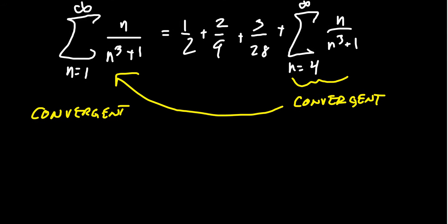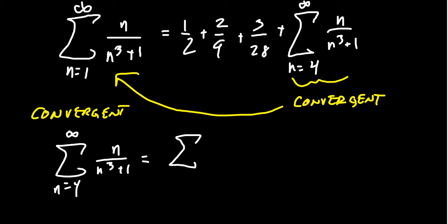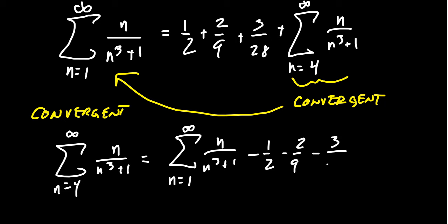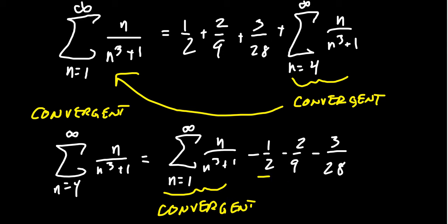We can flip this direction around. The series from n equals 4 to infinity of n over n^3 plus 1 equals the series from n equals 1 to infinity of n over n^3 plus 1, minus 1/2, minus 2/9, minus 3/28 to compensate. If we know the series starting at 1 is convergent — a finite number — then subtracting three finite numbers from it gives a finite number. Thus, the series starting at n equals 4 is likewise convergent.